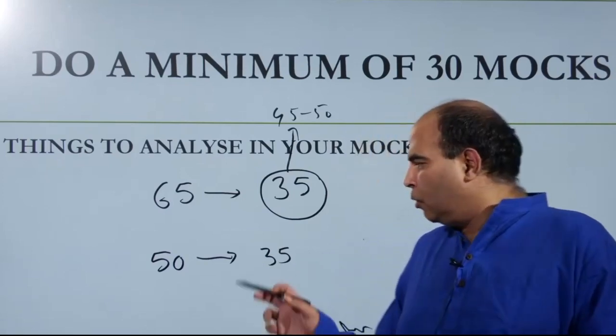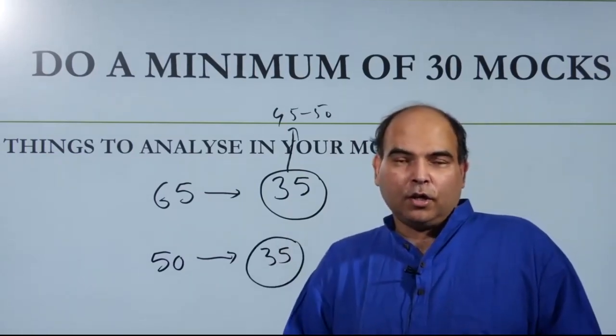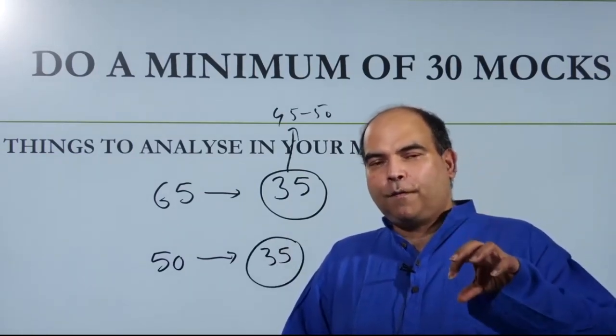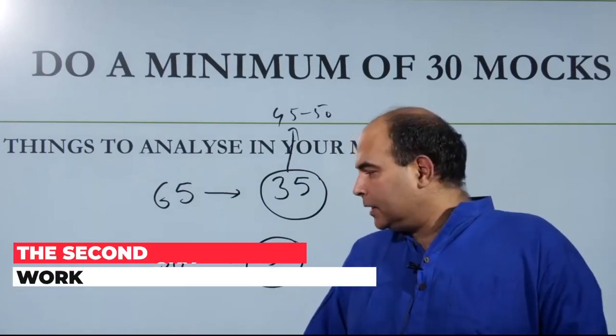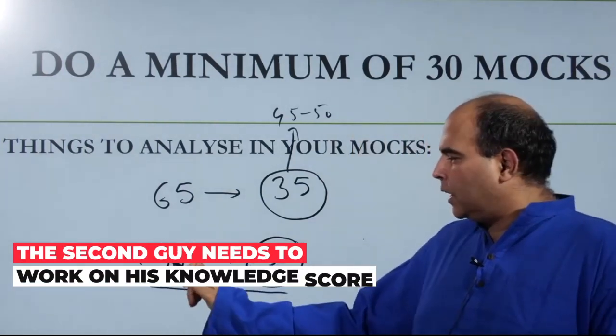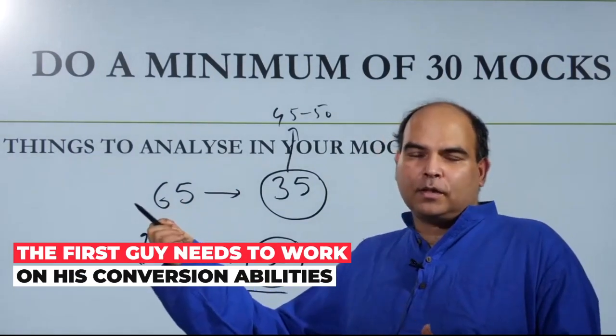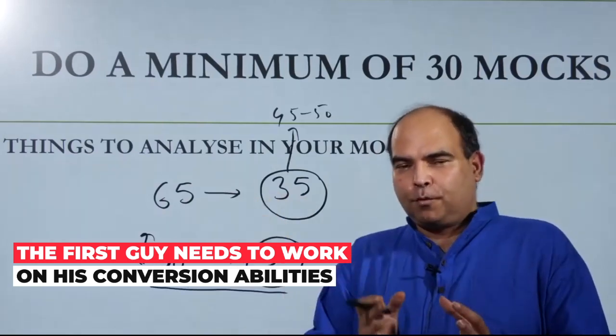If two people have 35 on a section test in the quant section or the verbal section, and one of them has a knowledge score of 50 and the other has 65, the first person, if he wants to improve his score, has to improve his knowledge score. So the next part of his work will get defined through that. And the 65 to 35 guy has to improve his conversion.